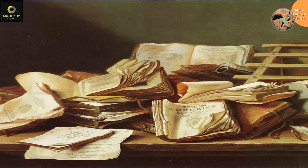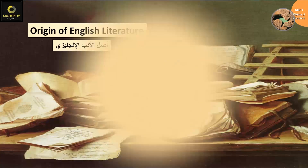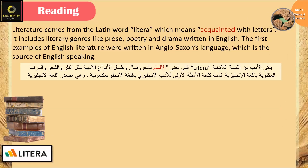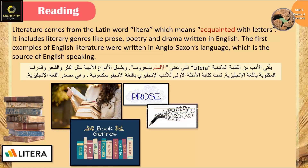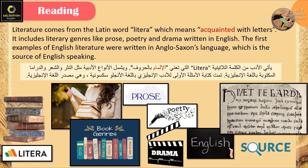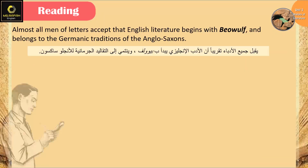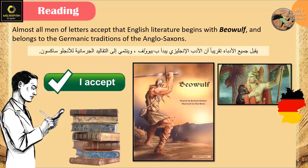Now let's start with the article: Origin of English Literature. Literature comes from the Latin word LITERA, which means acquainted with letters. It includes literary genres like prose, poetry, and drama written in English. The first examples of English literature were written in Anglo-Saxon language, which is the source of English speaking.